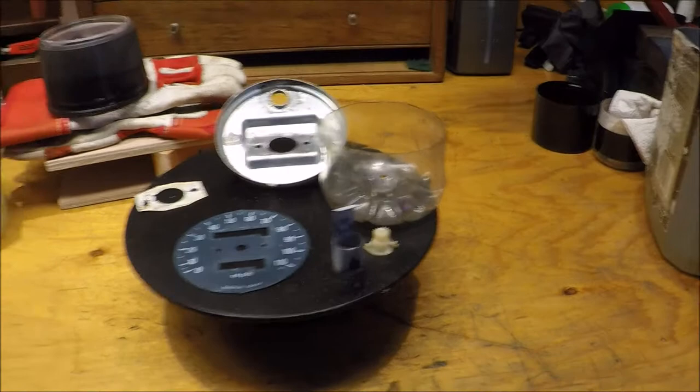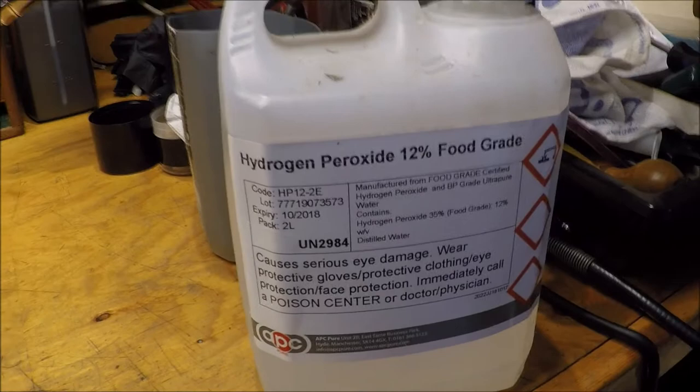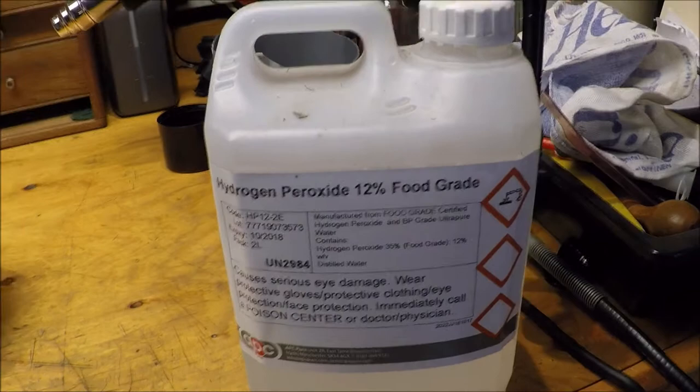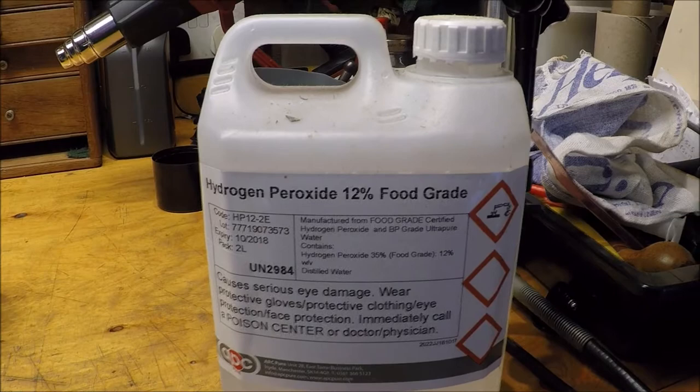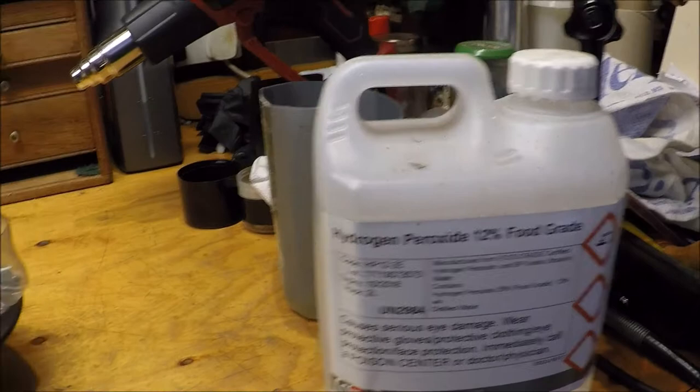You submerge the plastic in hydrogen peroxide in direct sunlight and it brings it back to its original whitish-creamish color rather than the yellowish color they tend to go. I'm giving this a go to see if the hydrogen peroxide will re-whiten the decimal figures and letters on the dials.